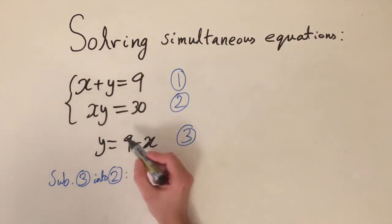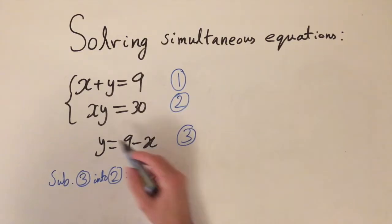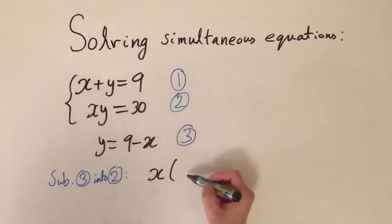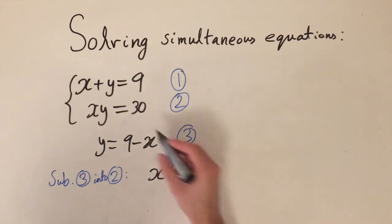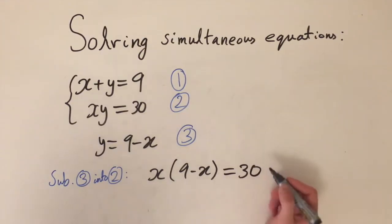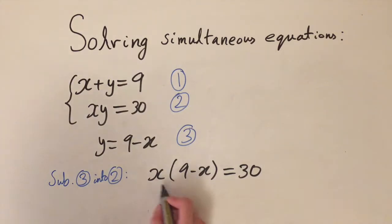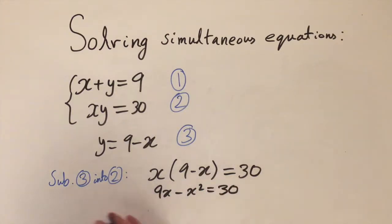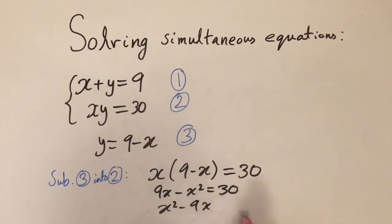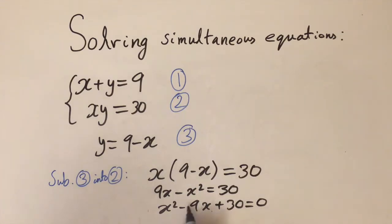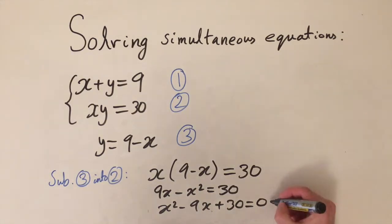Substituting equation 3 into equation 2: x times (9 minus x) equals 30. Expanding gives 9x minus x squared equals 30. Moving everything onto one side gives x squared minus 9x plus 30 equals 0. We now have a quadratic equation equal to zero.